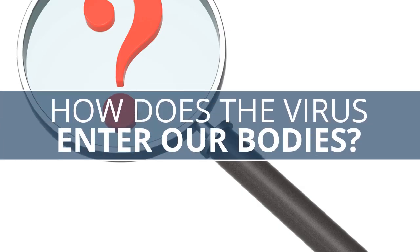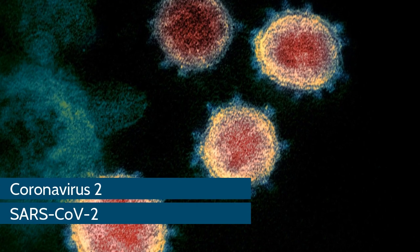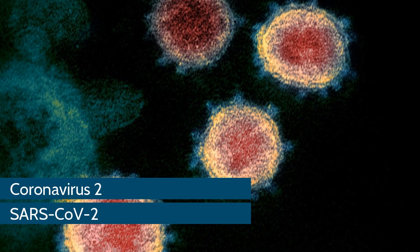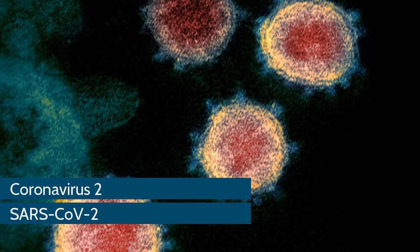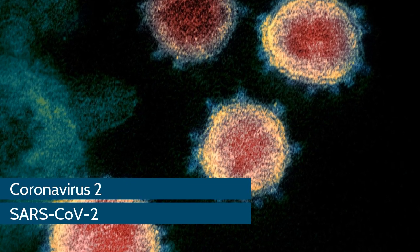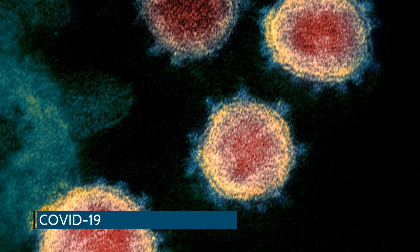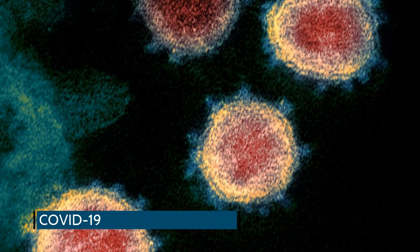In today's video I'm going to talk about how coronavirus 2 gets into our bodies and some of the possible targets for vaccine development and treatment. First, let's clear up some of the terminology. Coronavirus 2 is also known as SARS-CoV-2. SARS stands for Severe Acute Respiratory Syndrome and CoV stands for coronavirus. COVID-19, on the other hand, is the disease that is caused by the virus.